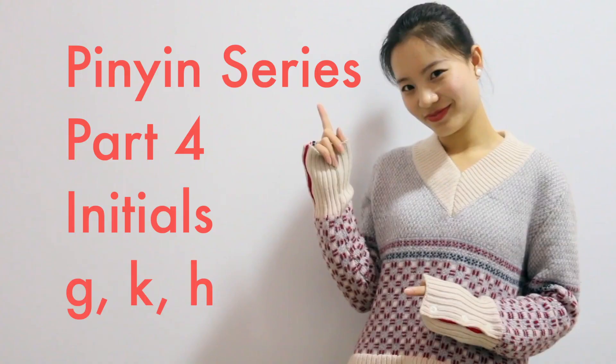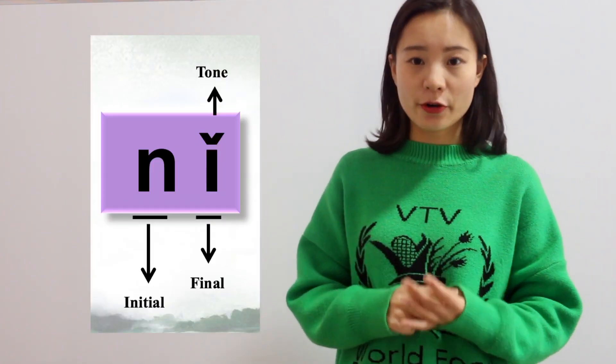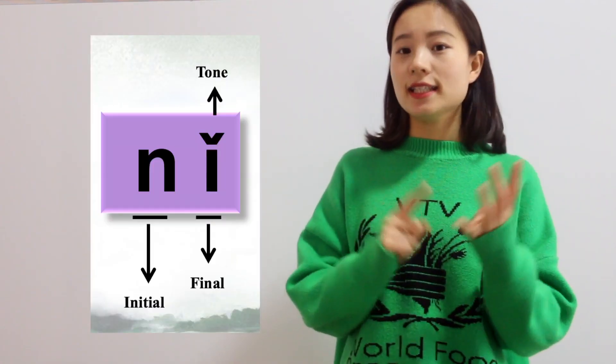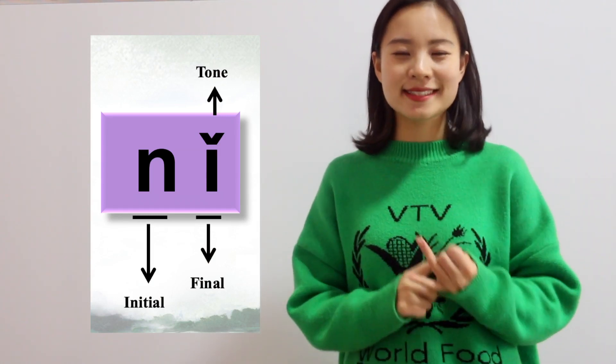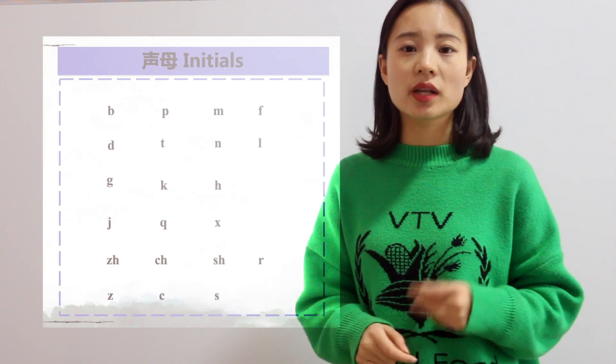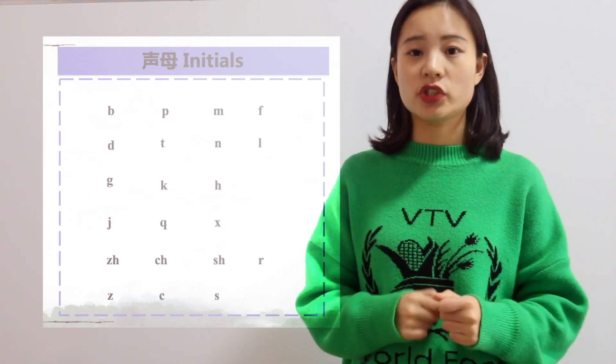Hello everyone, this is Linda from Instamandry. Welcome to our Pinyin series. Last week, we learned that Pinyin has three parts: initials, finals, and tones. And this time, I'm going to learn the initials. It's the third row: 哥, 哥, 喝.